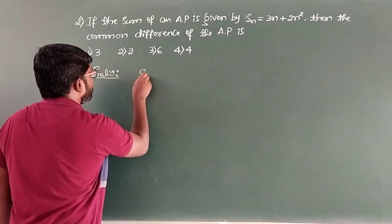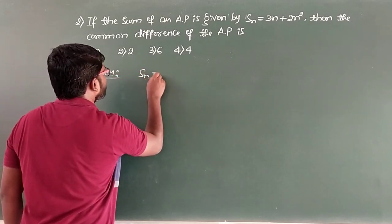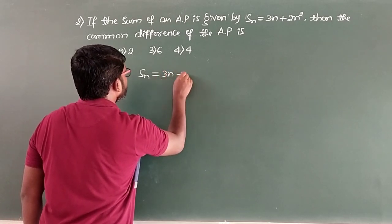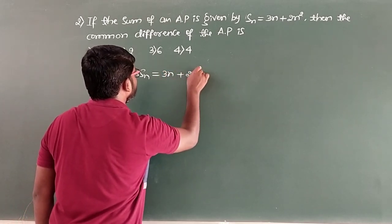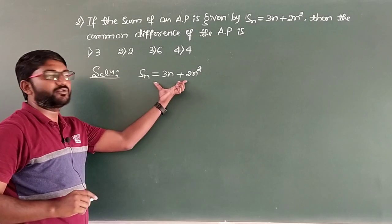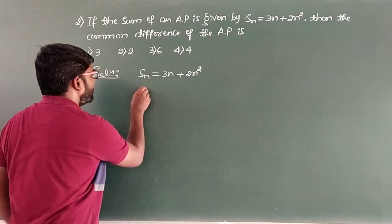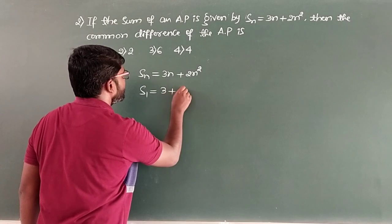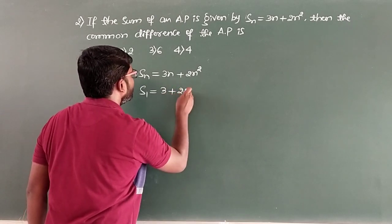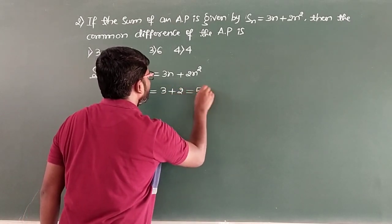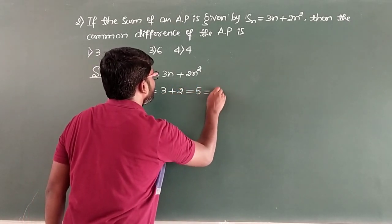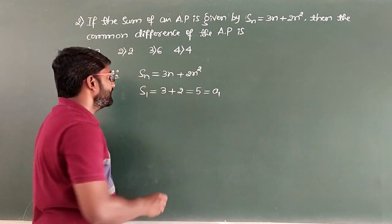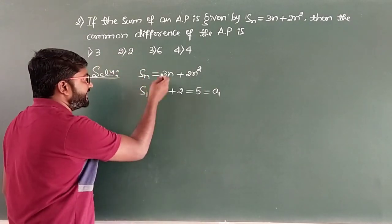So SN = 3N + 2N². For N = 1, we get S1 = 3×1 + 2×1² = 3 + 2 = 5. This is A1, since S1 is the sum of the first term. Now I will go for N = 2.